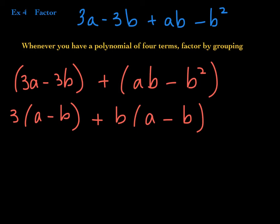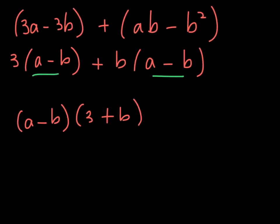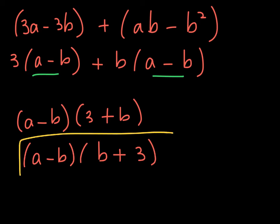The next step is to factor out that common binomial factor. Factor it out, and what you're left with is 3 plus B. So it's the common binomial factor times 3 plus B. Usually we write the variable first, so rewrite as B plus 3 — addition is commutative, so you can write it in any order. This is the complete factorization.